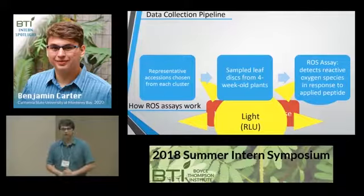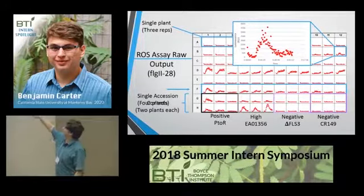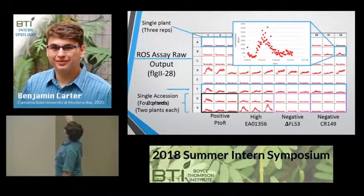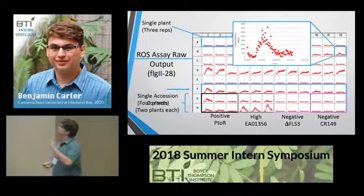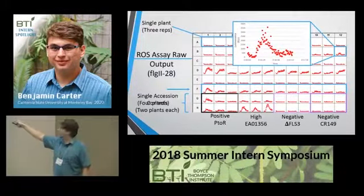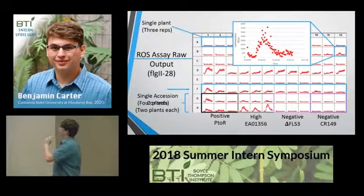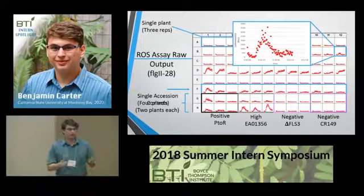This is an example of what a raw output from the plate reader looks like. I need to go through and determine where errors may have occurred and discard those wells from the data. Each one of these curves is a graph of the luminescence over time, measured in relative light units. For controls, I used at least two controls per PAMP per plate. I have a positive control, which is Rio Grande PTOR. I have EA01356 for the high control, previously identified in the screen. I have a FLS3 CRISPR knockout for my first negative control, and CR149 for my second negative control, also previously identified to have no response to flg28.